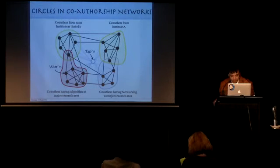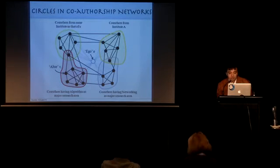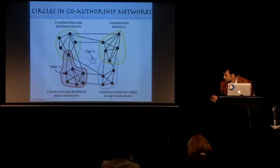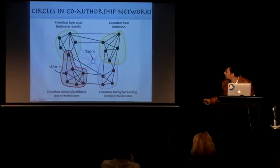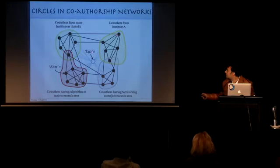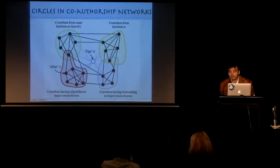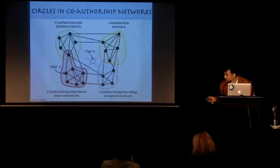From the time I have been presenting this work, the first question that comes up is how to define a circle. It takes me back to the definition of community — there is no hard and fast definition of communities, and similarly no hard and fast definition of circles. The idea is that there is an ego in the co-authorship network, and there are alters of this ego — co-authors from a certain institute, co-authors working in a networking research area, and so on. These are a kind of shallow definition of circles.